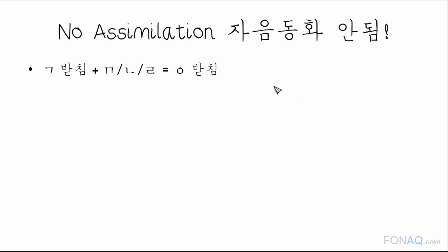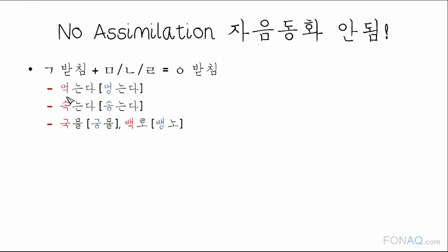For example, ㄱ 받침 plus ㄴ becomes ㅇ, so it's pronounced 먹는다. Same with 속는다. ㄱ 받침 plus ㅁ gives us 국물. ㄱ 받침 plus ㄹ gives us 백로.